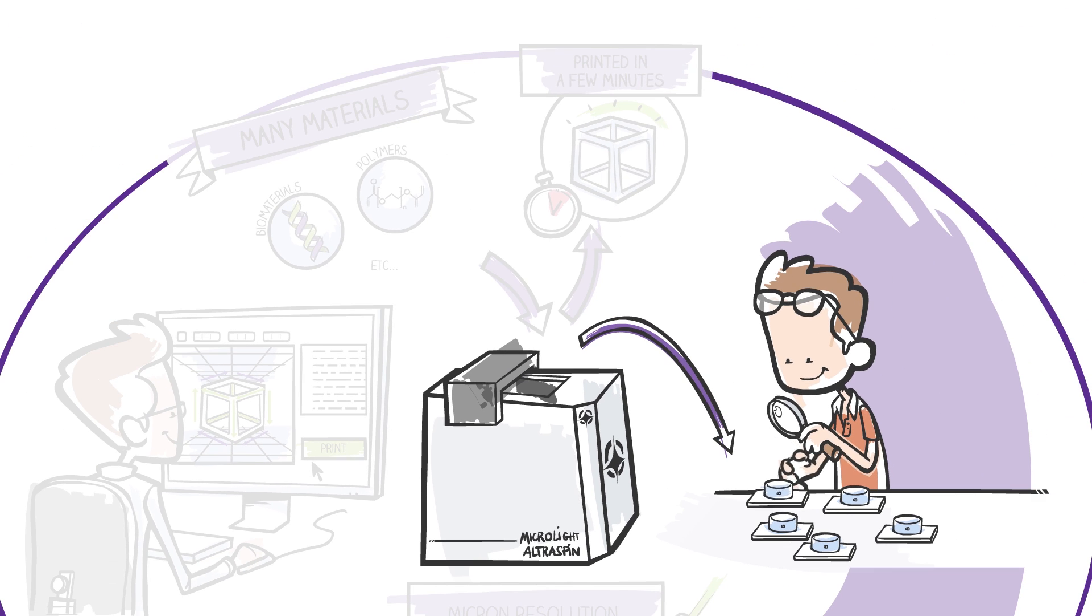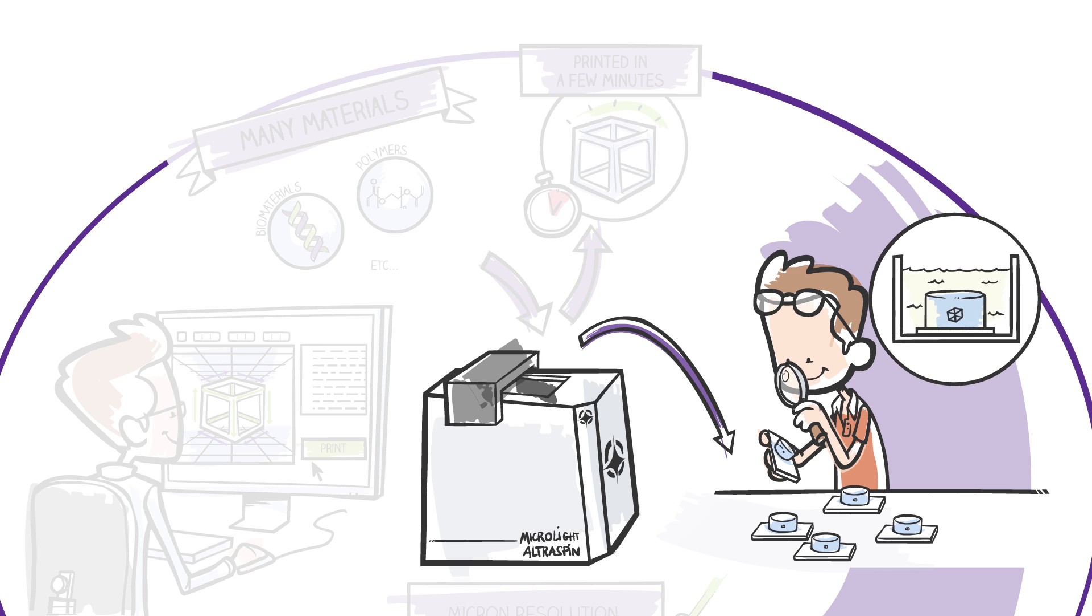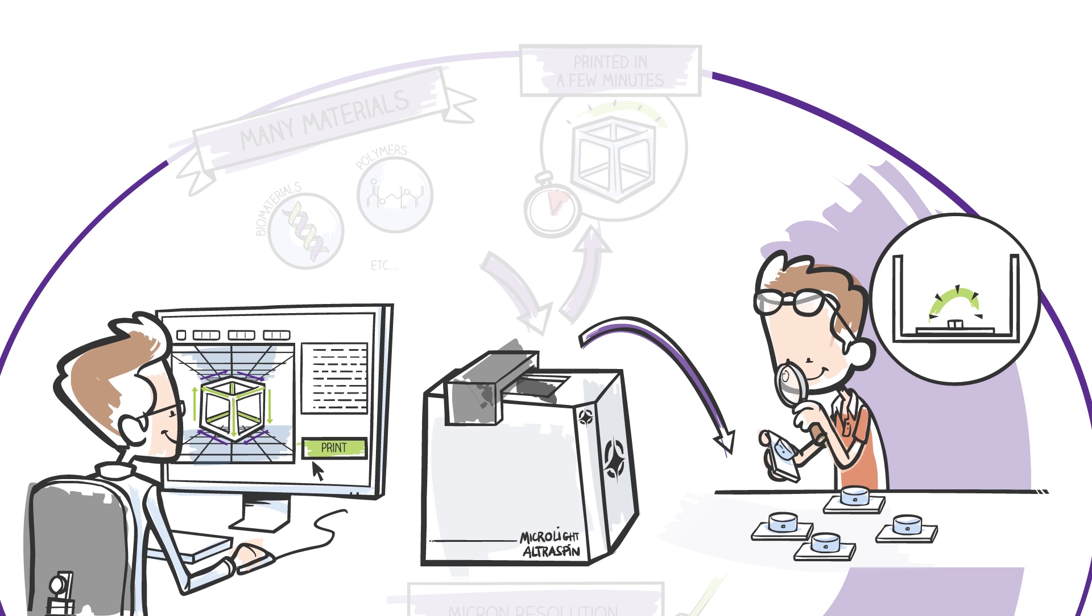Once the operation is completed, a solvent bath washes out the excess of monomer, and you can pick up your object which is identical to the initial model.